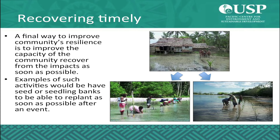Resilience also corresponds to the timely recovery of a community after an impact. Another way to improve resilience is to improve the capacity of the community to recover from the impact as soon as possible. That means the community needs to be prepared to react as soon as something happens — for instance, by piling materials and having skilled people in the community who are able to rebuild houses in a better way after a flooding or a cyclone. It can also mean having seed banks or seedling nurseries that allow farmers to replant crops as soon as the event is over, so food security can be restored very quickly.